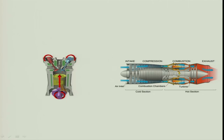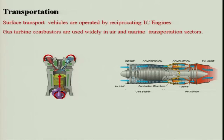These are the workhorses of power plants — particularly for the transportation sector — and they can also be used for generating electricity. Both engines can be used for generating electricity as well as transport. Surface transport vehicles are operated by reciprocating IC engines.